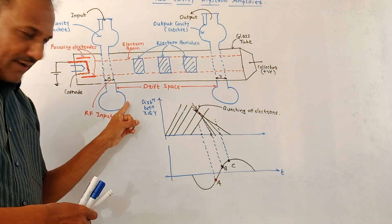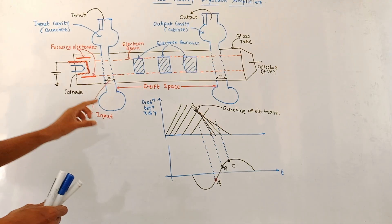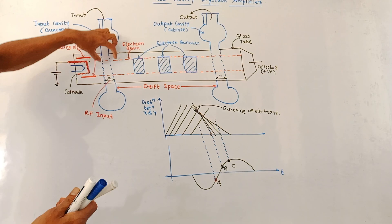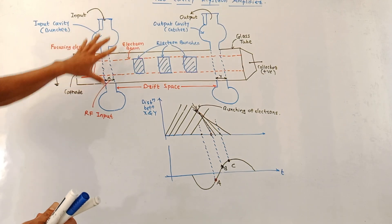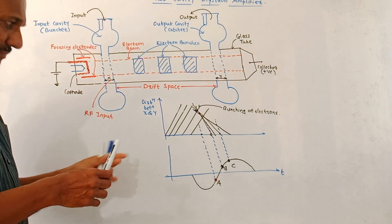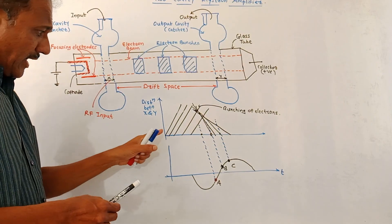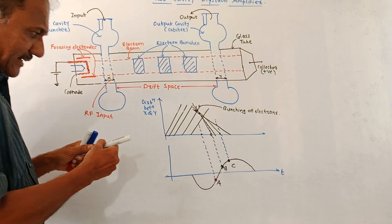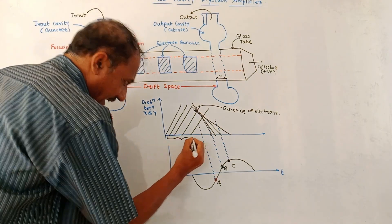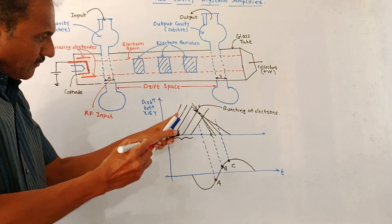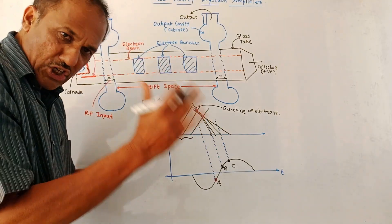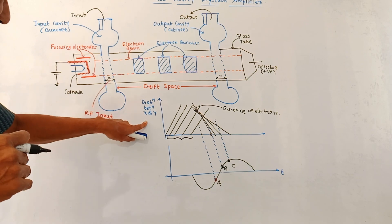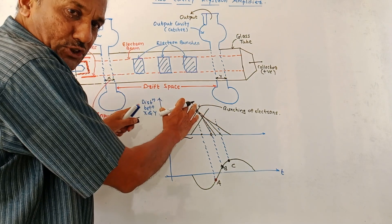The gap between the input and output cavity is called the drift space. The RF input voltage, which is to be amplified, is applied at the input cavity at gap X as shown in the diagram. Whenever the RF input signal is not applied, the corresponding lines show that the slope of each line remains constant. Each line represents the distance between X and Y, that is the drift space.